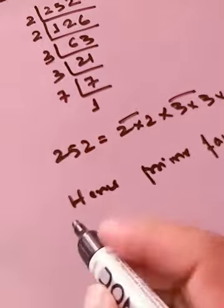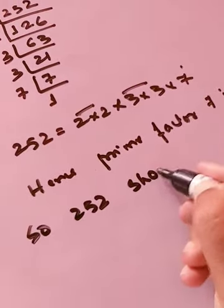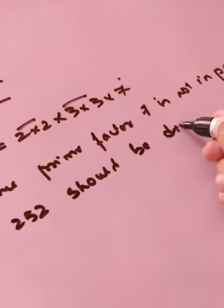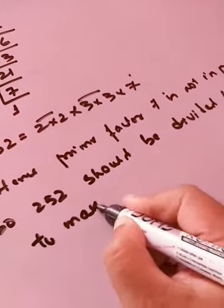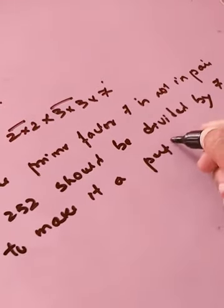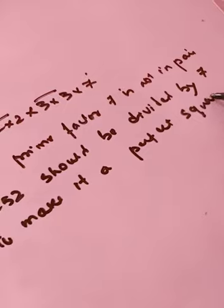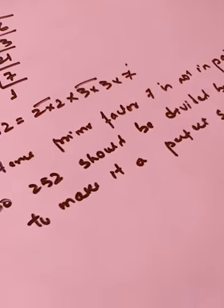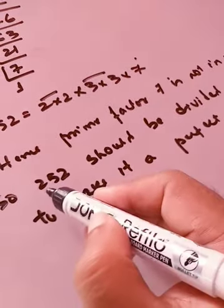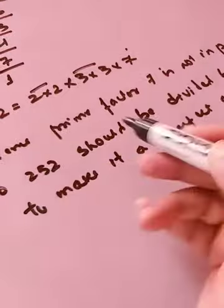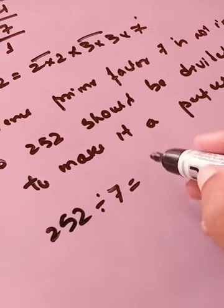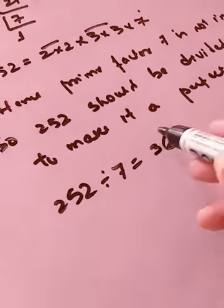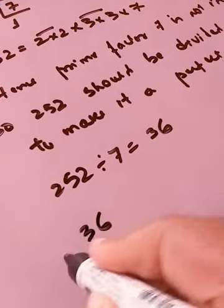So 252 should be divided by 7 to make it a perfect square. So now we know what is the smallest number that 252 has to be divided by, so let's divide 252 by 7, so your answer would be 36. Now you have to show that this 36 is really a perfect square number so again you have to go for a prime factorization.